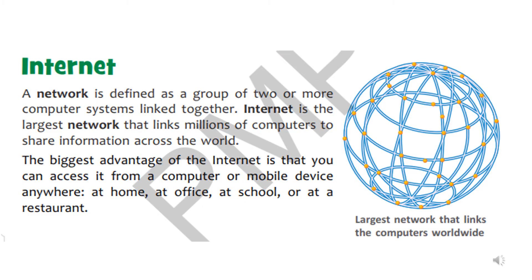Children, before learning about the internet, we should know what a network is. A network is when two people are connected with each other in any manner. Like you have a group of friends — you all are connected with each other through your friendship, so you have created a network. Same way, when two or more computers are connected with each other, that is a network. And when millions of computers around the world are connected with each other, that is an international network, meaning internet.